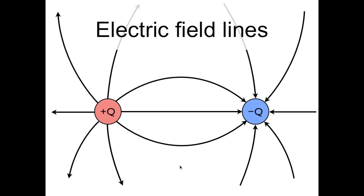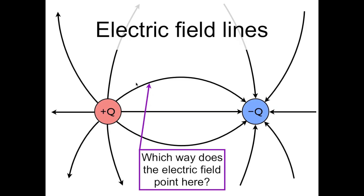Electric field lines tell the direction the electric field is pointing at different locations. For example, which way does the electric field point here? To find out, we can draw in the tangent to the field line. The direction of the electric field is indicated by the arrows on the electric field line, so the electric field here points this way.